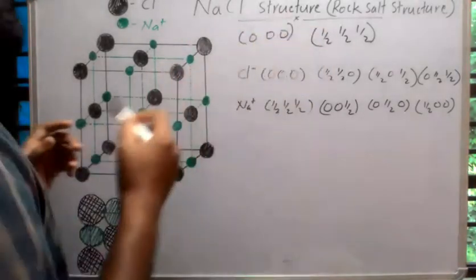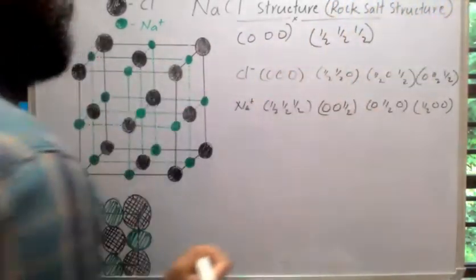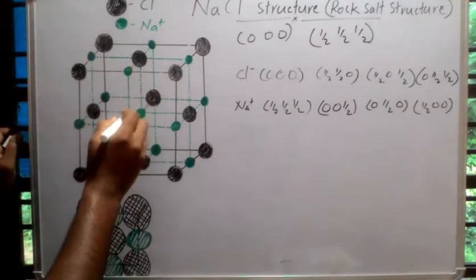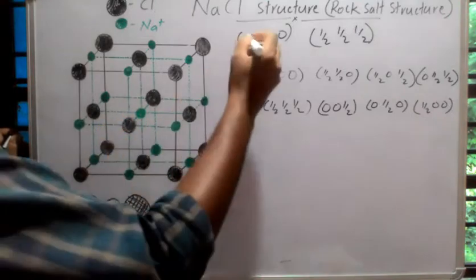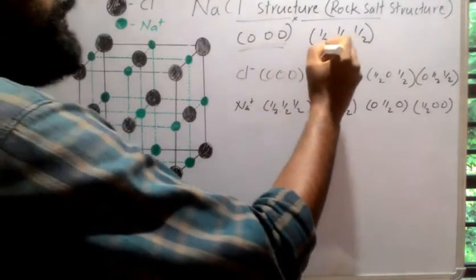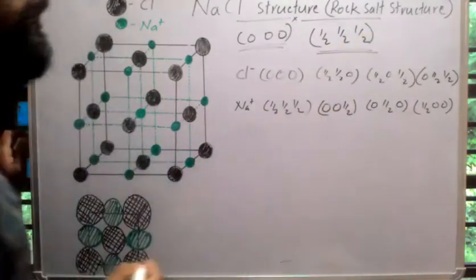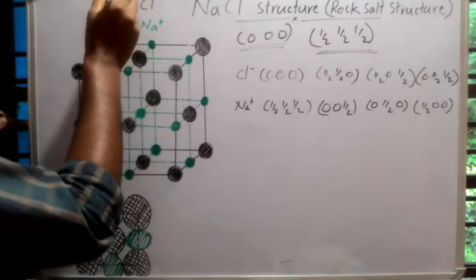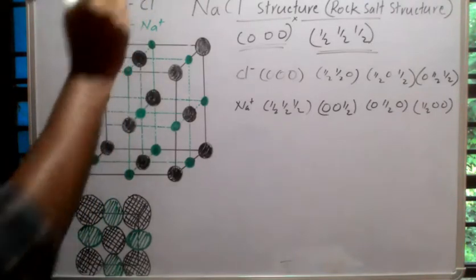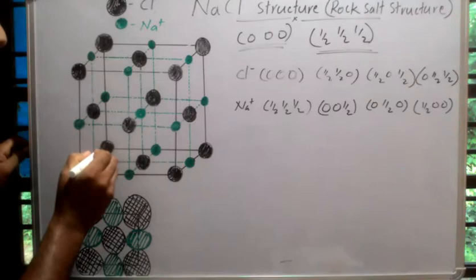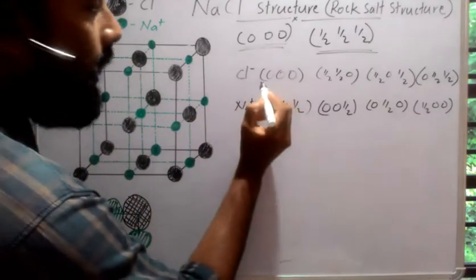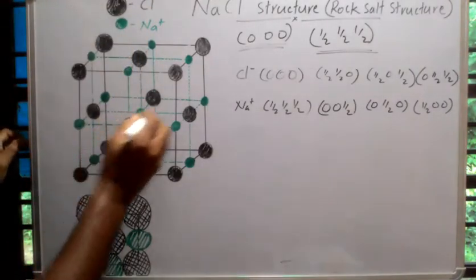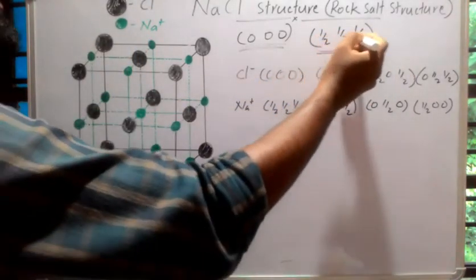Now we discuss sodium chloride structure, or rock salt structure. The sodium chloride structure consists of two interpenetrating FCC lattices: one with the origin at (0, 0, 0) — to which the chlorine ions are attached — and another FCC lattice with the origin at (1/2, 1/2, 1/2) — to which the sodium ions are attached.